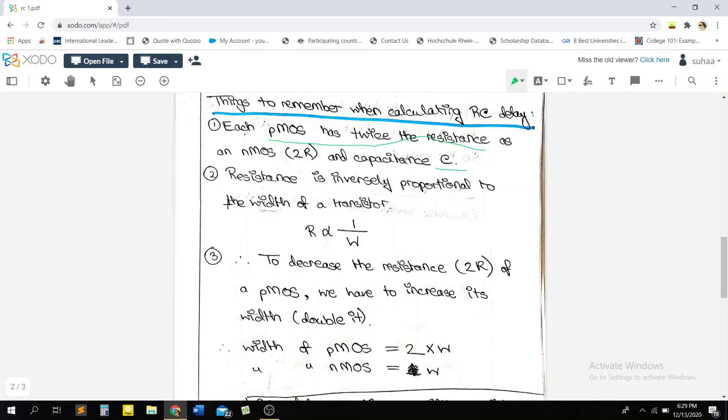So another thing that we need to know is that resistance is inversely proportional to the width of a transistor. So what this basically means is that if we increase the width, then resistance of the transistor will decrease. So if this increases, then the resistance will decrease.